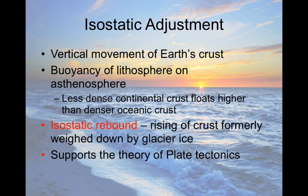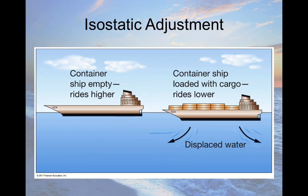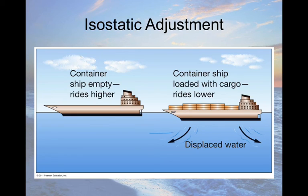Isostatic rebound is really important for plate tectonics theory because if the plates are floating on something and bouncing around due to weight changes, that supports the idea of plate tectonics. There's also a diagram in your book illustrating isostatic adjustment — if you load a ship with weight it displaces more water and sits lower, and the displaced water rises elsewhere. Push down on a continent and something else goes up; remove that weight and it rebounds. That's isostatic rebound, and that's where we'll end this section of the chapter.